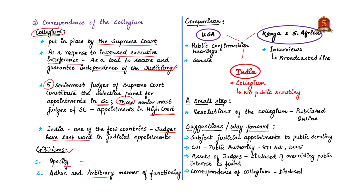In the United States, candidates are subject to public confirmation hearings by the Senate, and based on the hearing a candidate may be approved for judicial appointment. Despite the USA having high judicial independence, it makes the judiciary accountable. In Kenya and South Africa, interviews of candidates are broadcasted live to the public. Whereas in India, the correspondence of the collegium and the process of judicial appointments has no public scrutiny — the Supreme Court has essentially immunized itself from public scrutiny. However, in 2015, the Supreme Court acknowledged some of the criticisms and, as a small step, began publishing the resolutions of the collegium online.